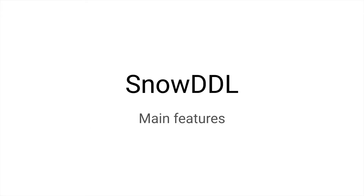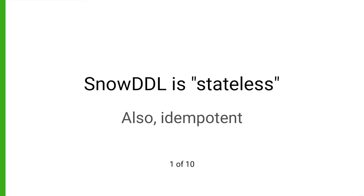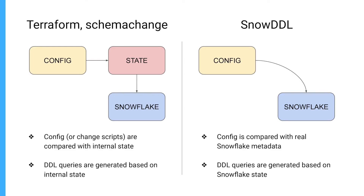What makes Snow DDL different from all other tools? First of all, Snow DDL is stateless. Both Terraform and schema change rely on internal state to operate. This state is stored separately and introduces one more point of failure — potentially the state might get incorrect, tainted, and very hard to repair. Snow DDL has no such things. Every time you launch Snow DDL, it parses the config and compares it directly with metadata stored in the Snowflake account. There is literally nothing to break.